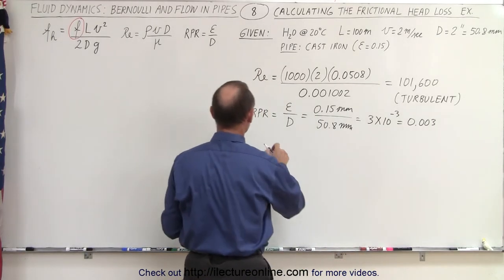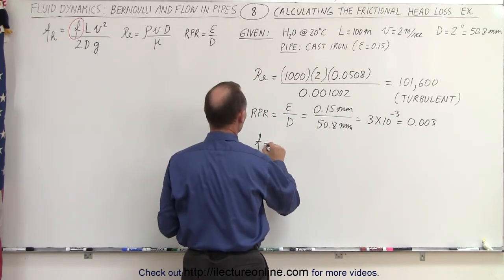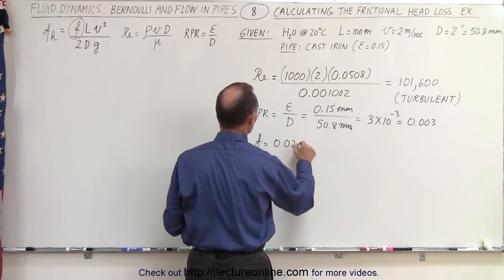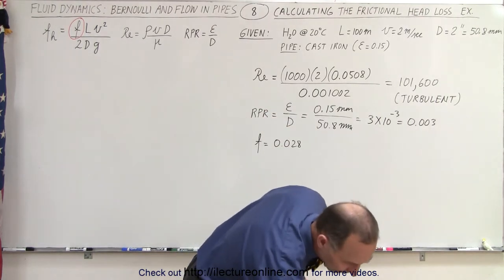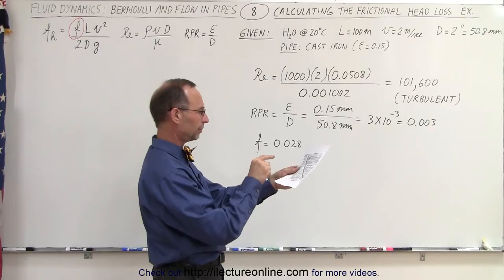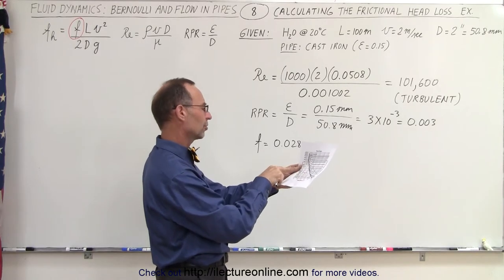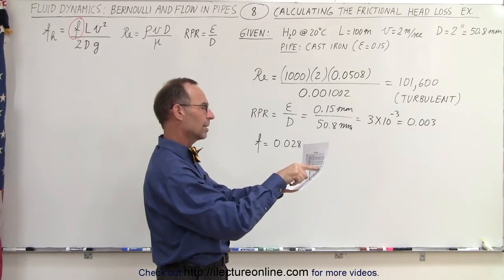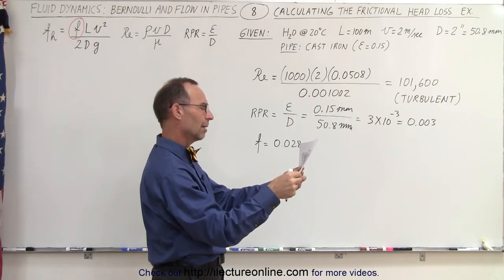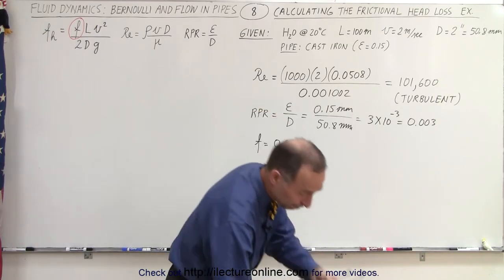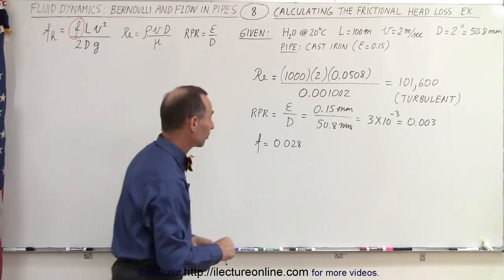So that means from using this that the friction factor is equal to 0.028. And let me quickly check that again. 0.03, 0.02, 0.038. Yeah, that's probably a fairly good estimate. Again, it's approximately.